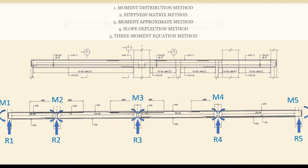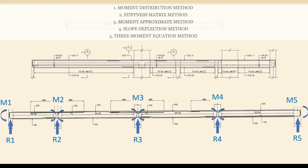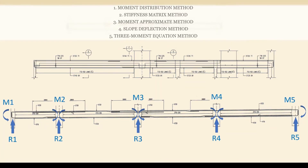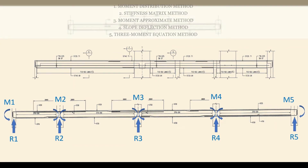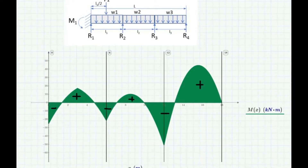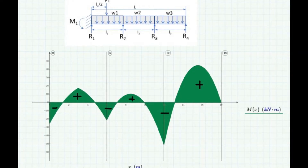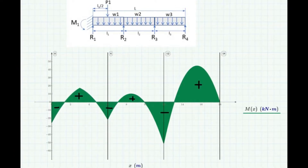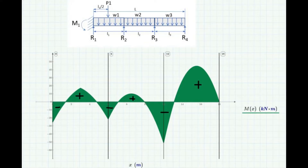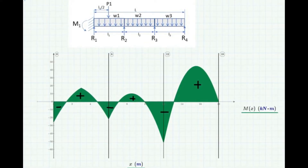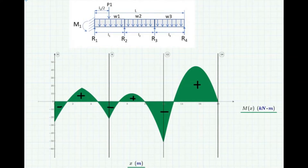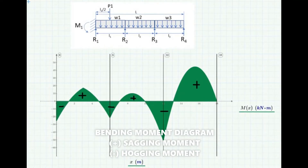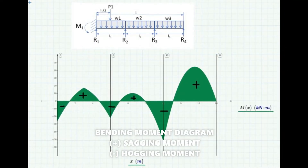Then I will use the equilibrium equations to calculate the reaction forces. Since I'm using MathCAD, I will define an equation for shear at any given distance x, as well as equations for moments, so that MathCAD will be able to display the diagrams accordingly. The good thing about plotting the shear and bending moment diagrams is we will have a visual idea of how the beam will behave when different loadings are applied. We can visualize which location along the span will react with maximum moments — either positive sagging moments or negative hogging moments.